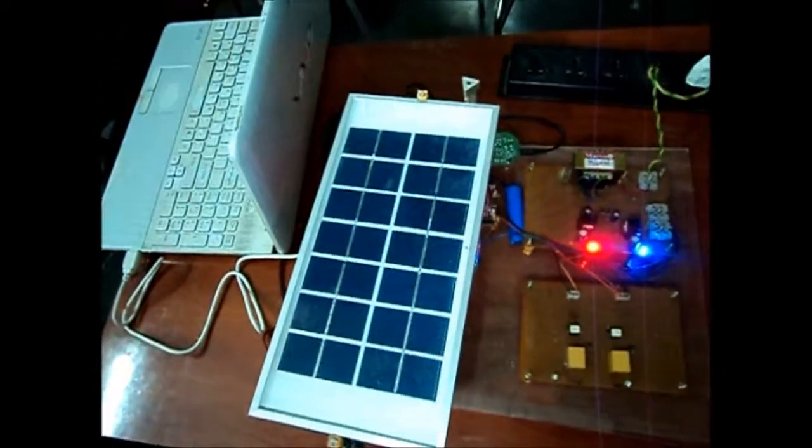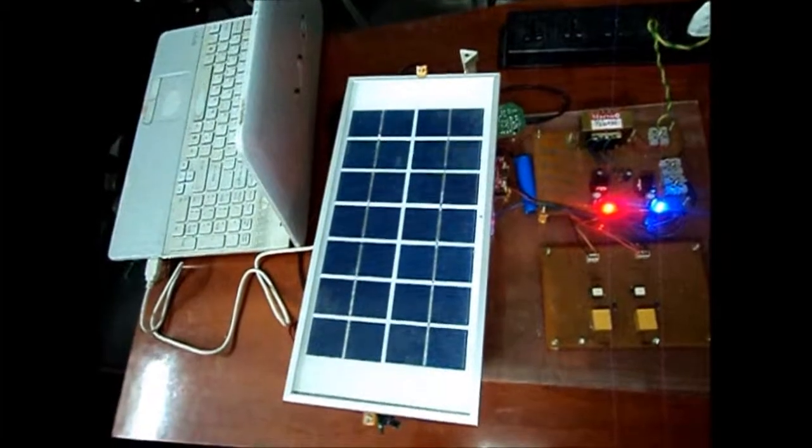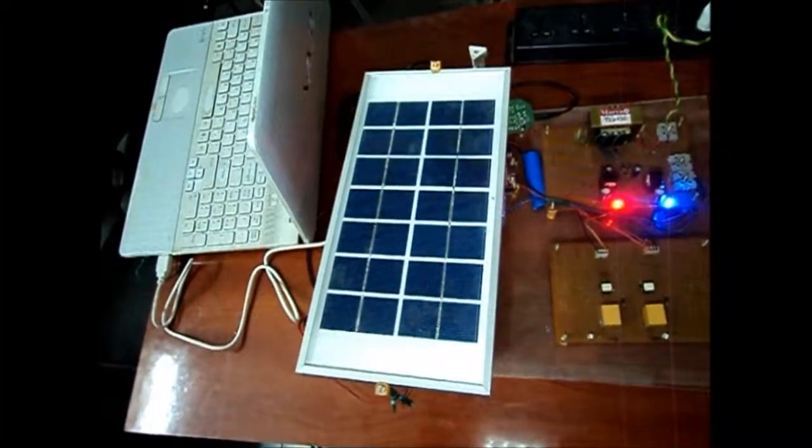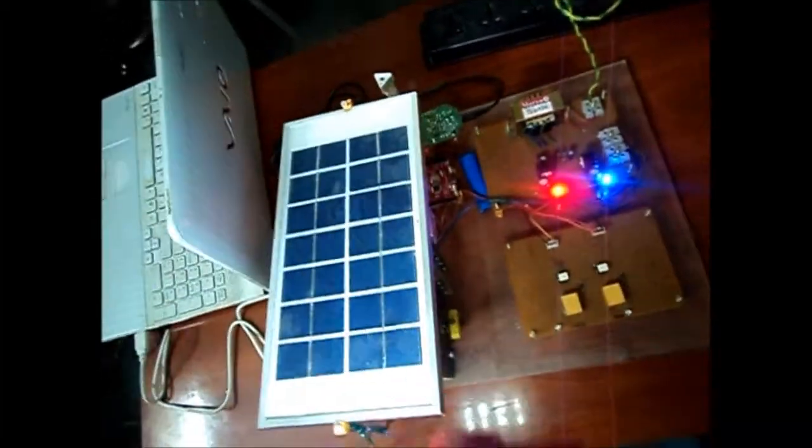So the microcontroller determines the difference between the LDR values and moves the motor accordingly. And we have a solar battery over here. The solar panel charges this battery and this battery drives the circuit of light. So as you increase the light intensity in a specific direction, the LDR voltage difference makes the microcontroller to move the panel in that specific site.